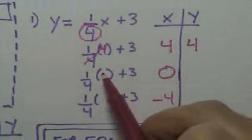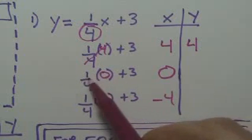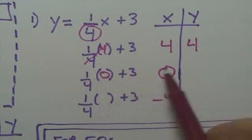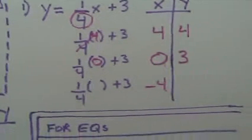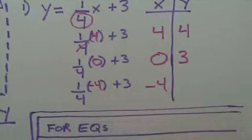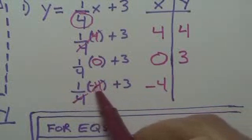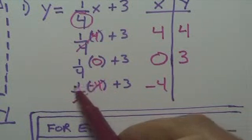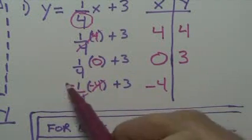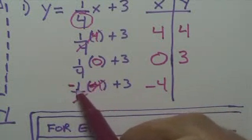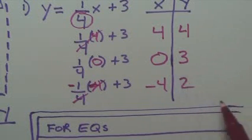Now let's put 0 in there. If I put 0 for x, 0 times 1 fourth, 0 times anything is 0. And 0 plus 3 is 3. Now let's put negative 4 in there. The 4's will cancel, reduce, and you're left with just a negative or negative 1. So 1 times negative 1, that's just negative 1. So this whole thing becomes negative 1. And so negative 1 plus 3 is how much? 2.